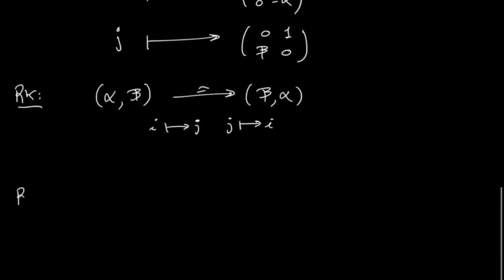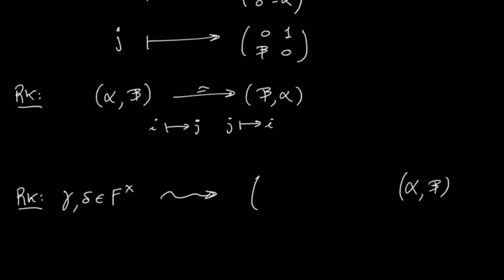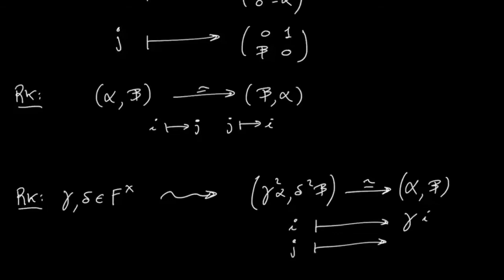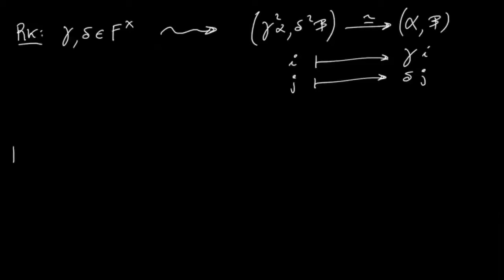Another interesting remark: suppose we have two invertible elements of our field. We can consider the quaternion algebra as usual, but we can also multiply alpha and beta by squares of elements. If we do that, it turns out we get an isomorphism that sends the generator i to gamma·i and the generator j to sigma·j. This tells us that quaternion algebras are in fact well-defined up to squares — they do not change when we multiply alpha or beta by squares.